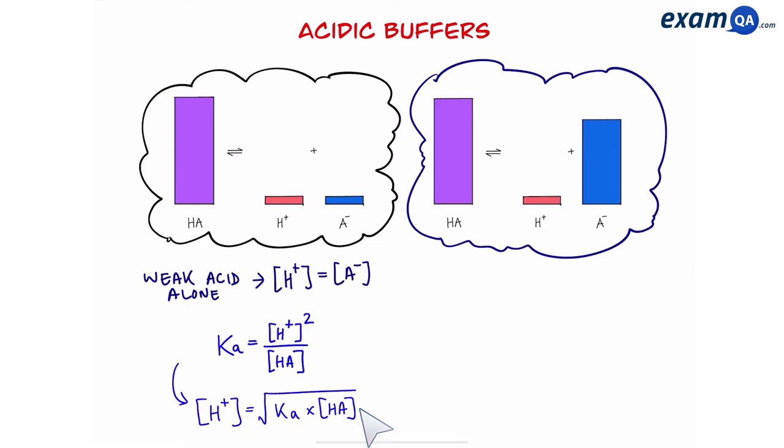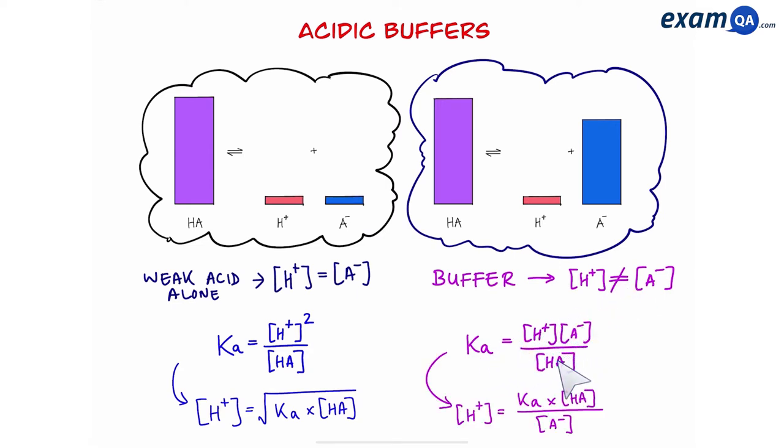And of course once you have H+ that means you also have pH after doing minus log to the base 10. Now for a buffer, the concentration of H+ and A- are not equal. So that means we cannot use the same formula on the left. We have to use Ka equals H+ times A- over HA. Also rearranging this gives us a different expression.